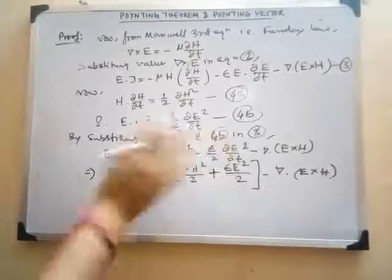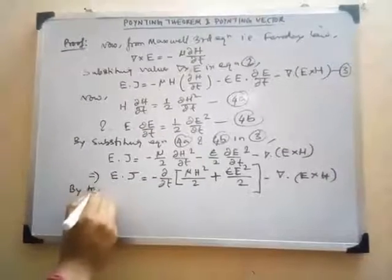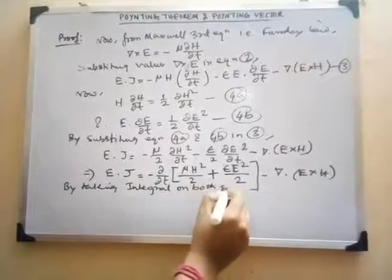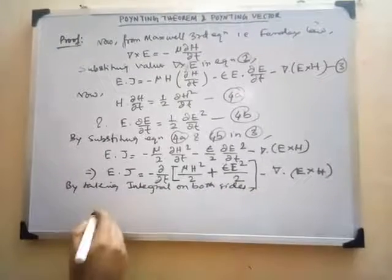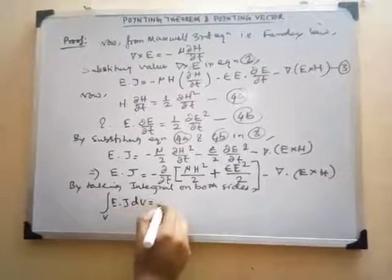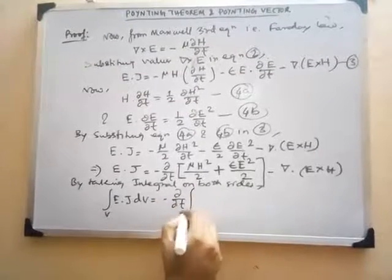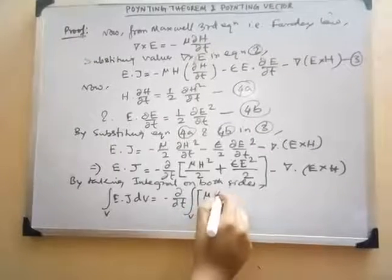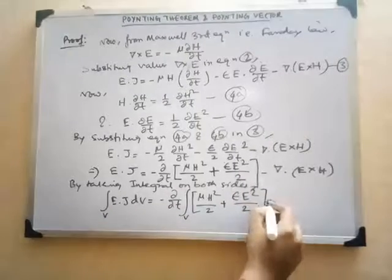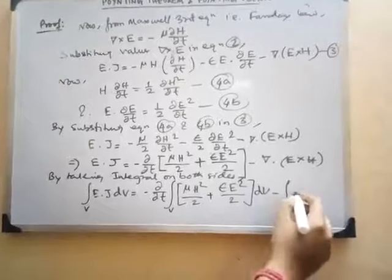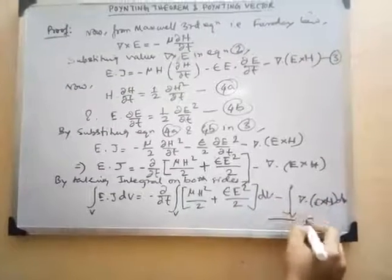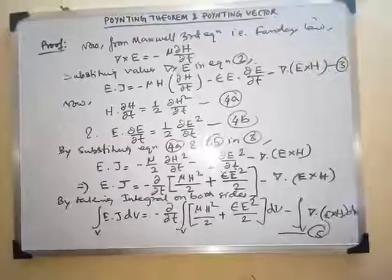Taking the volume integral on both sides, we obtain the volume integral of E dot J dV equals minus del del T of the volume integral of (epsilon E squared by 2 plus mu H squared by 2) dV minus the volume integral of del dot (E cross H) dV. We name this equation 5.